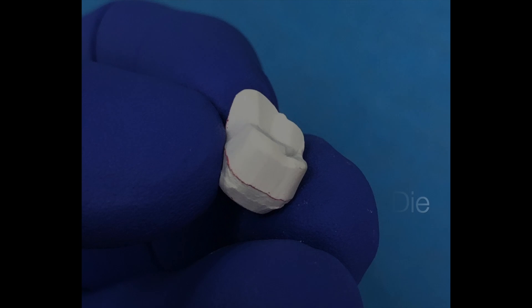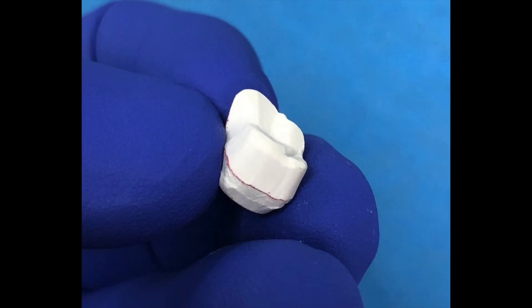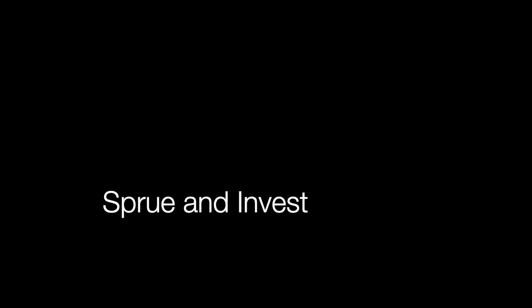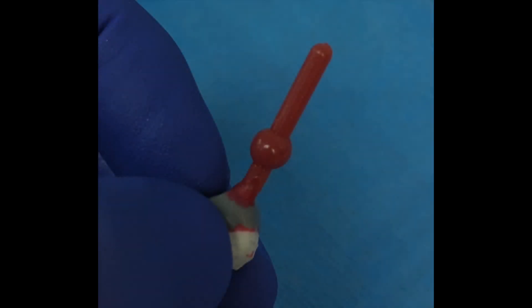Let's start with the wax-up and we're going to do this on a regular die. This is a Fuji rock die. Then we're going to transfer this die to a die made of the investment material from the same impression and then simply sprue and invest this with the same investment material.